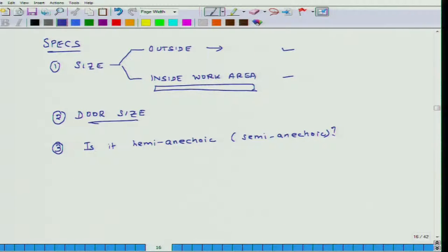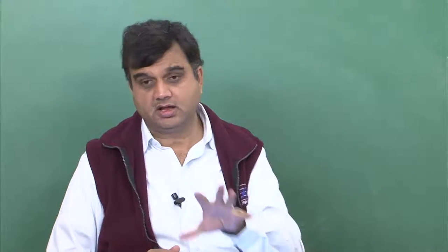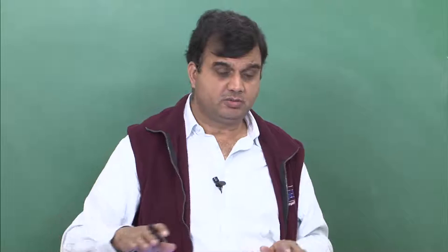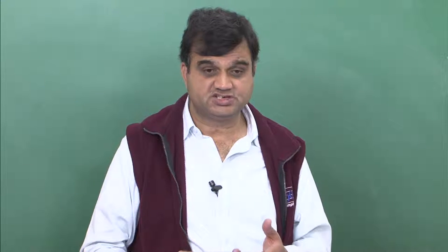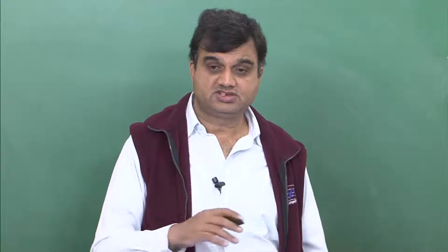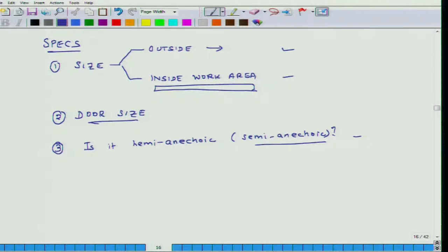A fully anechoic chamber has all six surfaces lined with noise-absorbing geometry. In a semi-anechoic chamber the floor is still a hard, reflective floor. Semi-anechoic chambers are somewhat less expensive because you do not need a grill with cones below it, but they are not truly anechoic since one surface is still reflecting. So you must decide whether semi-anechoic will suffice or whether you need a fully anechoic chamber.